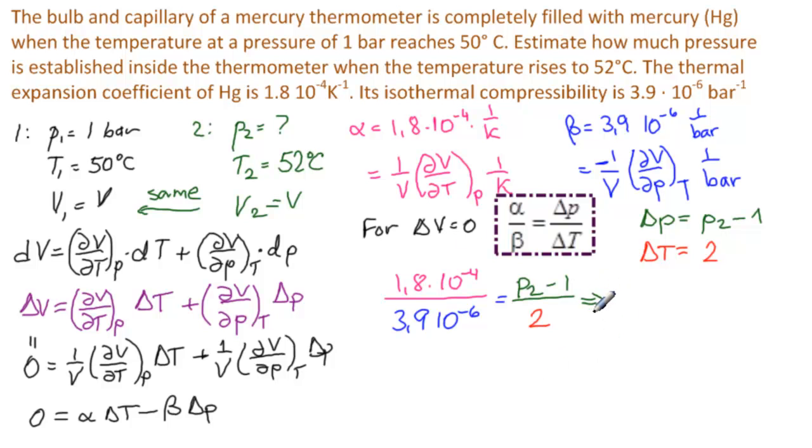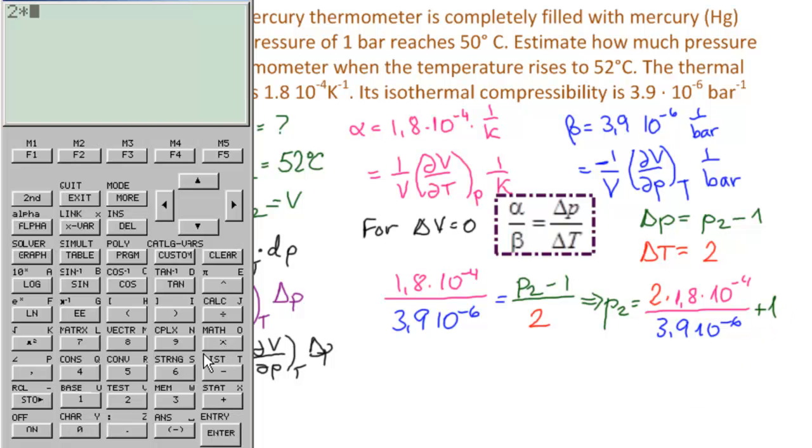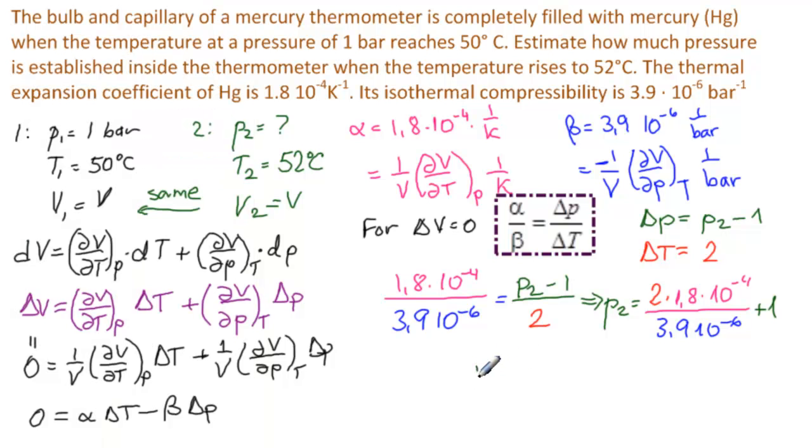So P2 equals 2 times 1.8 times 10 to the minus 4 divided by 3.9 times 10 to the minus 6, and then we add 1. Get our calculator out. So we have 2 times 1.8 EE minus 4 divided by 3.9 EE minus 6, hit enter, and then add the 1. So 93.3. So P2 equals 93.3 bar. This is the answer.